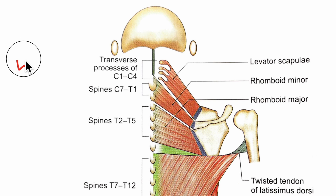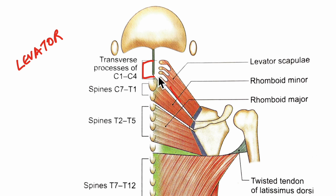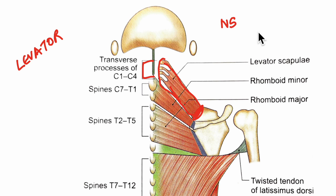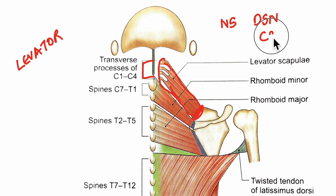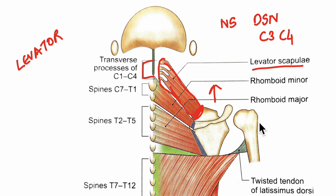Next let's learn about the levator scapulae muscle in detail. It originates from the transverse processes of C1 to C4 vertebrae and it inserts into the superior angle and the upper part of the medial border of the scapula. The nerve supply of the levator scapulae is a branch from the dorsal scapular nerve and also from branches of the C3 and C4 spinal nerves. Its action is elevation of the scapula and it also steadies the scapula during the movements of the arm.